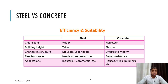In terms of efficiency and suitability, steel gives wider clear spans. Also in terms of height, steel can be as tall as possible — you can build 80-story or 10-story buildings easily with steel. With concrete, feasibility depends on the overall area. Regarding change in structure, if a client has constructed a building and after 5 years wants to expand or make changes, it is very difficult for a concrete building. But if it is a steel building, it is very easy.